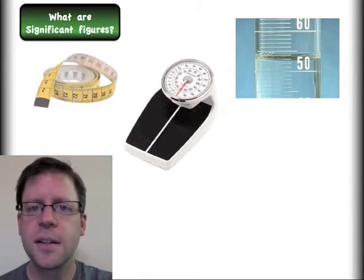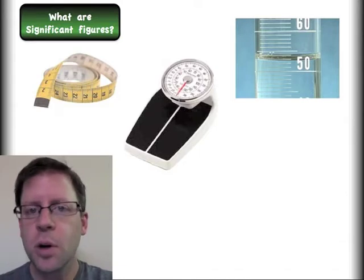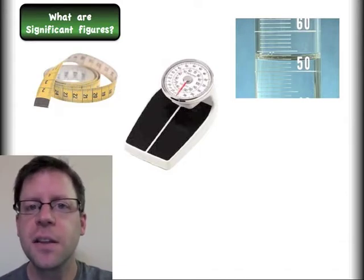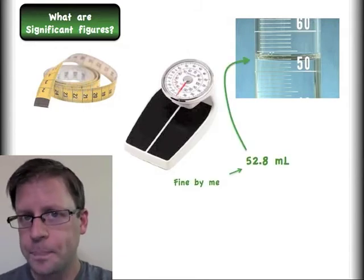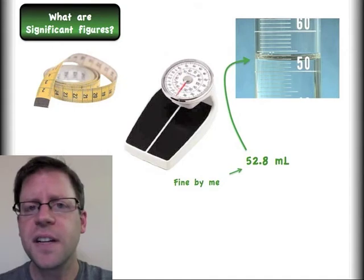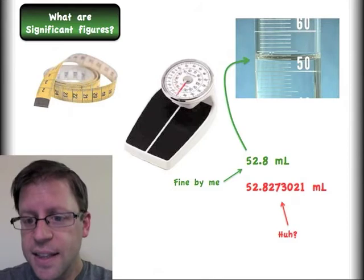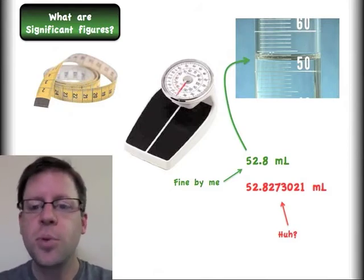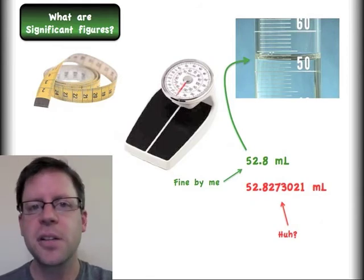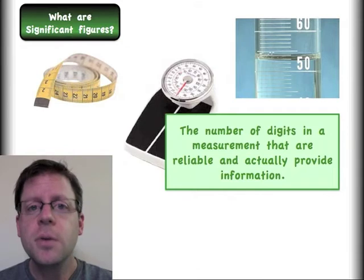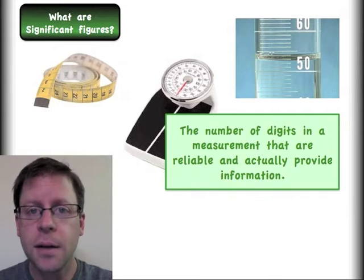If you look at this graduated cylinder that's right here, we can see that the bottom of the meniscus is somewhere between the 52 and the 53 mark on the graduated cylinder. I might say that it's 52.8, but there's some level of uncertainty. What you certainly can't do is you can't say that it's a digit that is this specific, that is 52.8 and then all these other decimals. There's no way to know that information.